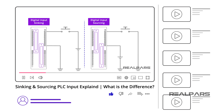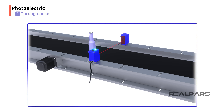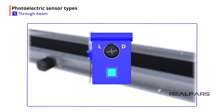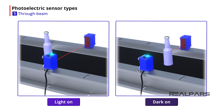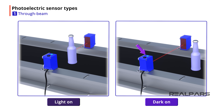If you would like more information on sinking, sourcing, PNP, and NPN, check out our video titled PLC Inputs Sinking and Sourcing. There is a link for this video in the description. Some photoelectric sensors have a light on/dark on mode selector switch. With this switch, you can change when the sensor's output turns on and off. In light on mode, the sensor's output will be on when the light can reach the receiver, and off when the light is blocked. In dark on mode, the sensor's output will be on when the light is being blocked and not reaching the receiver, and off when the light is reaching the receiver.